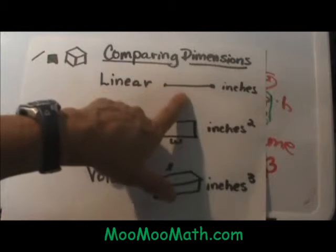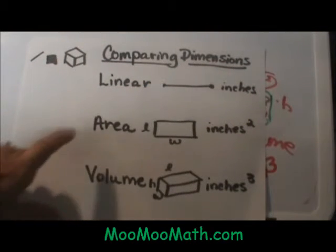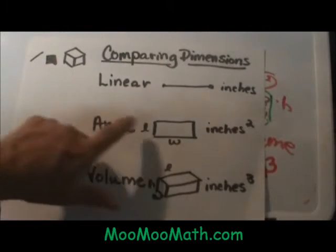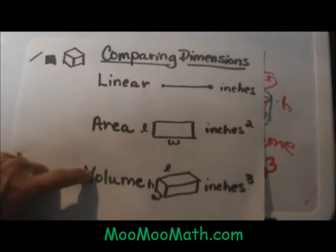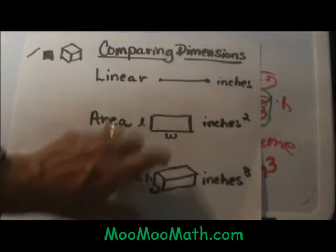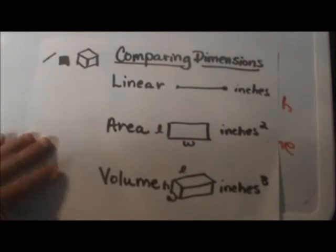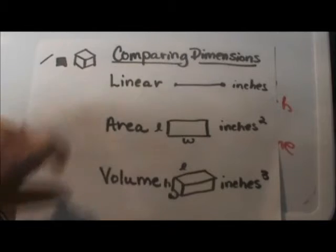Linear is just a distance, straight distance in one dimension. Area is two dimensional. It has length and width to cover an area. Volume is three dimensional, length, width and height. The units are always cubed. So you have linear, area and volume. I hope this video was helpful.